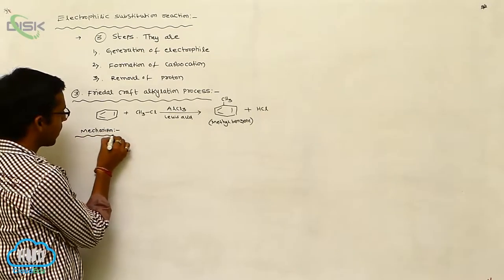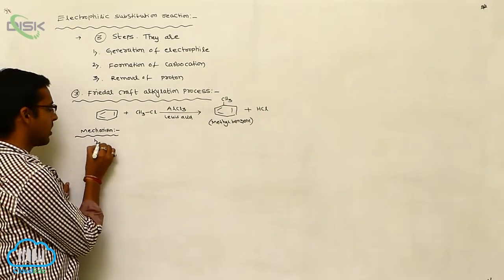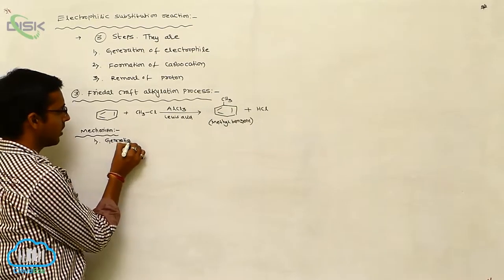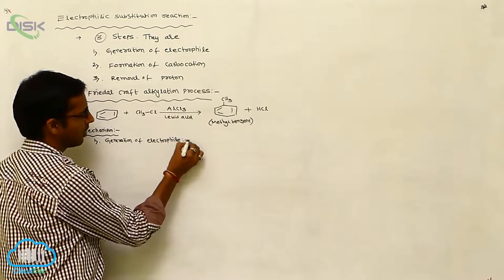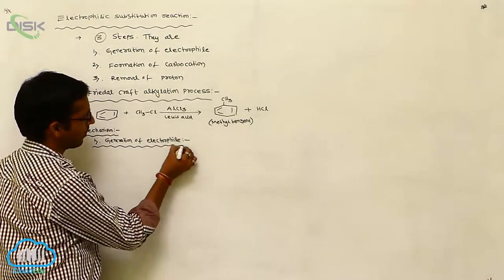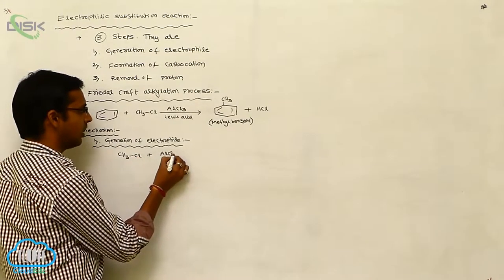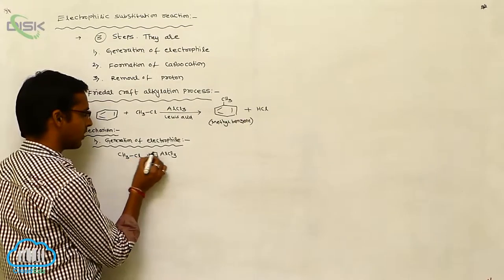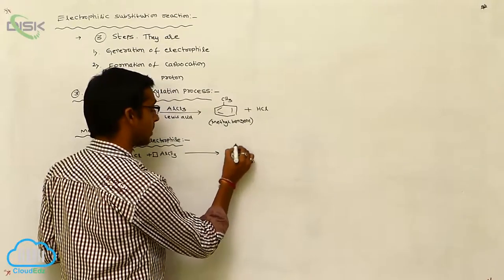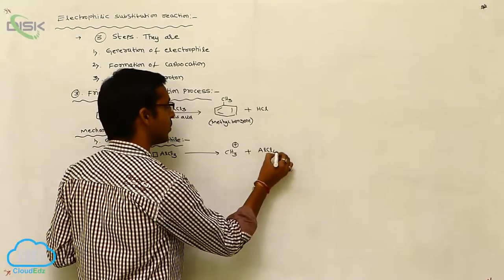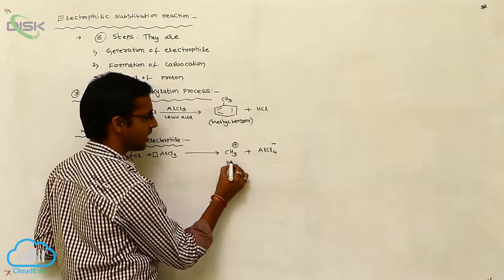The mechanism of the Friedel-Crafts alkylation reaction: the first step is the generation of the electrophile. Here, alkyl chloride — methyl chloride — interacts with the Lewis acid. The C–Cl bond undergoes heterolytic cleavage, giving a methyl carbocation (CH₃⁺) and AlCl₄⁻. This methyl carbocation acts as the electrophile.